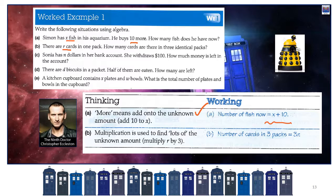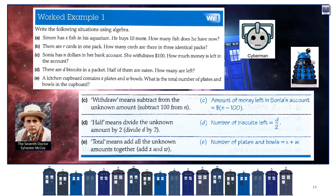There are R cards in one pack. How many cards are in three identical packs? We want to multiply that by 3. We don't write R times 3, we write 3R. Next: Sonia has N dollars in her bank account. She withdraws 100 — so she started with N and took away 100. What is now in her bank balance? N minus 100.